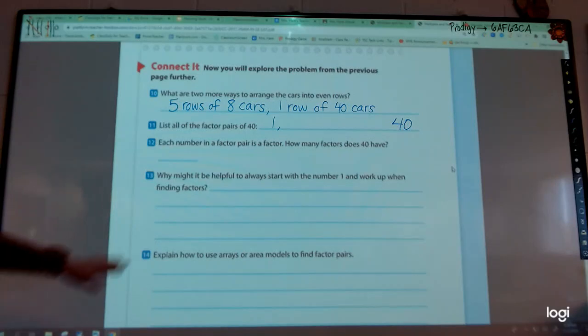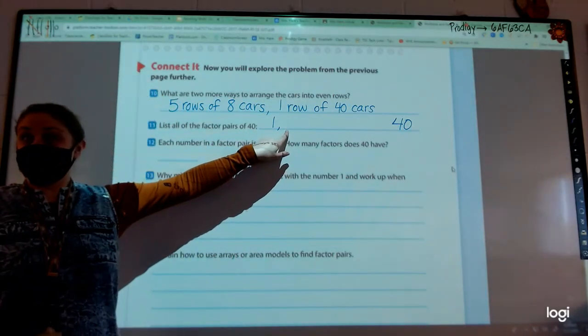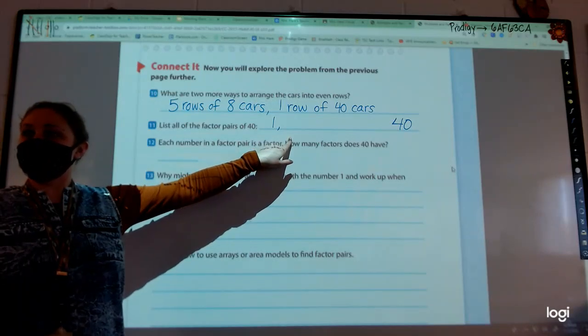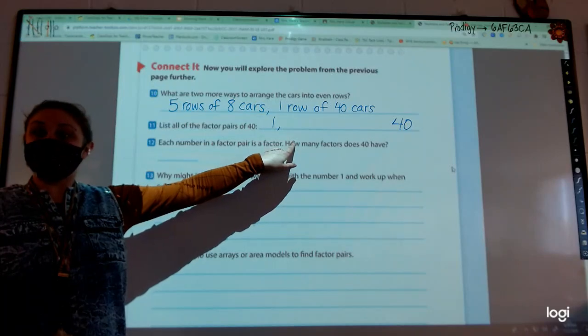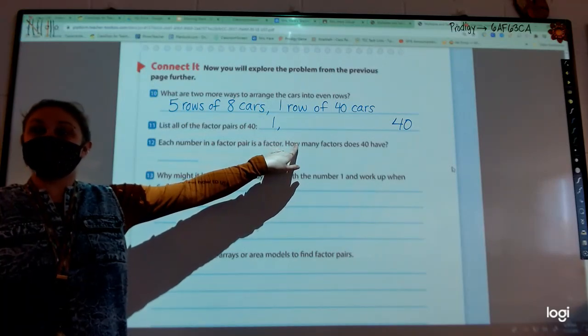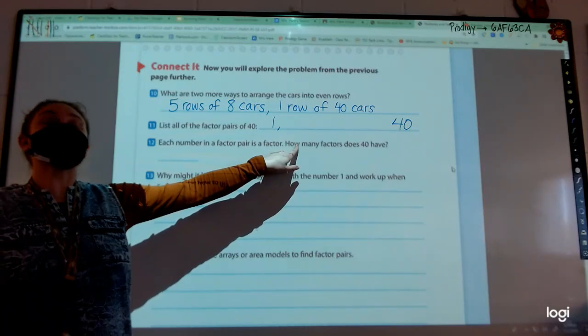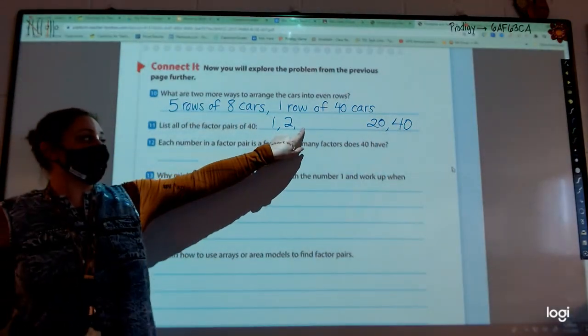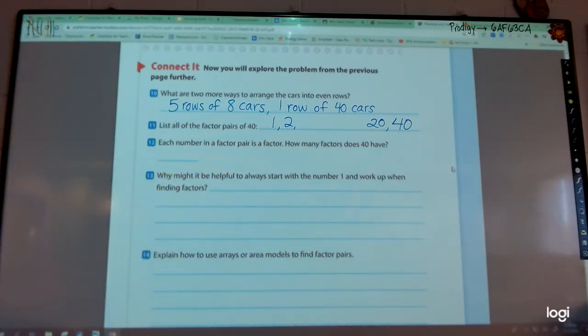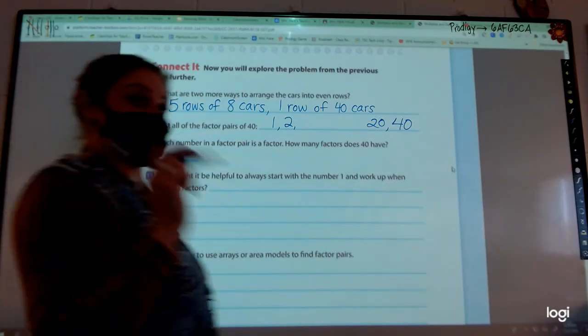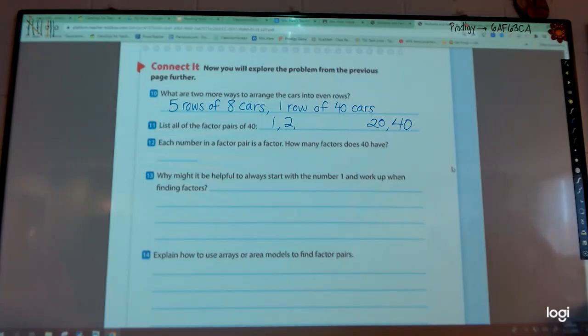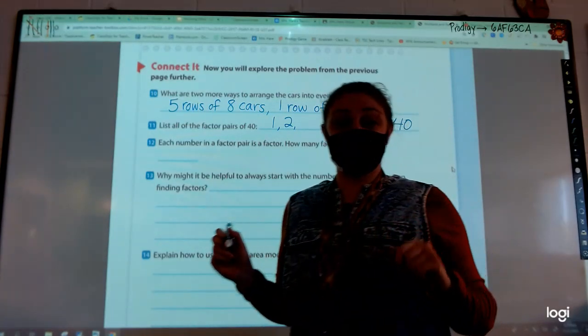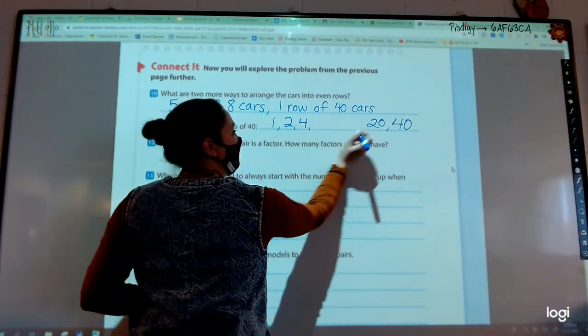So, one and 40, are those factor pairs of 40? Yes. Now, I'm just going to move up to the next digit. The next number would be a two. Can I multiply two by a number to get 40? Yes. So, how many twos to make 40? Two times what is 40? Twenty. So, I put my two right here and my 20 I'm going to put over here. Now, I'm ready for three. Can I divide 40 evenly by three? You cannot divide 40 by three. Not evenly. So, I skipped three. What about four? Four times what is 40? Ten. So, I put my four and over here I can put my 10.